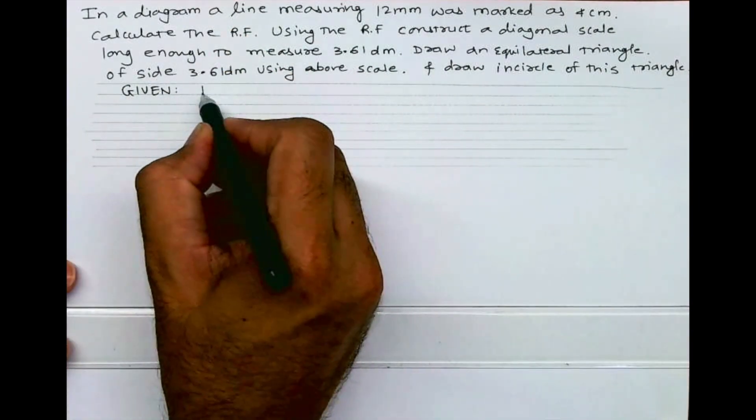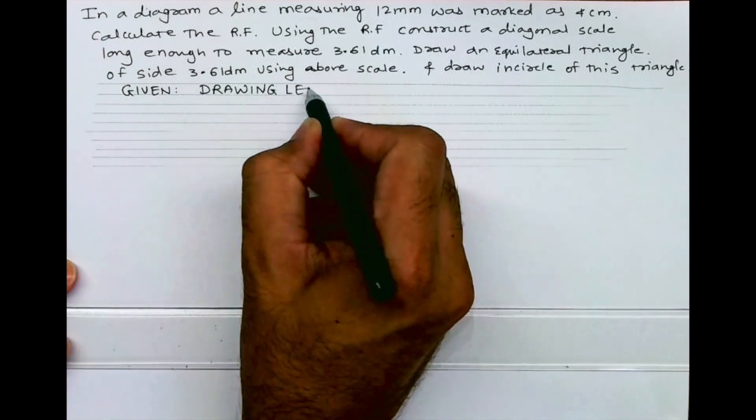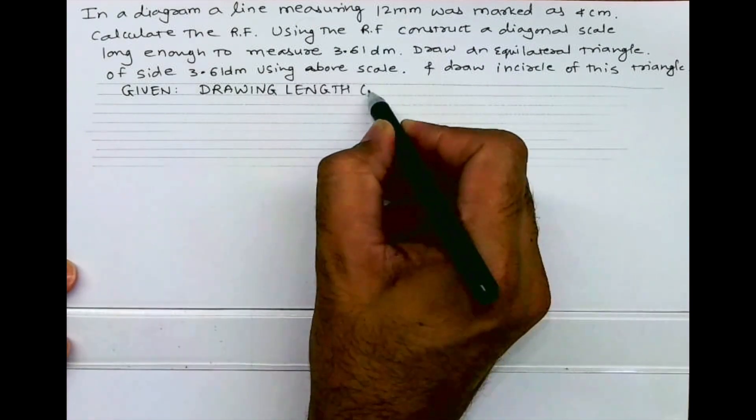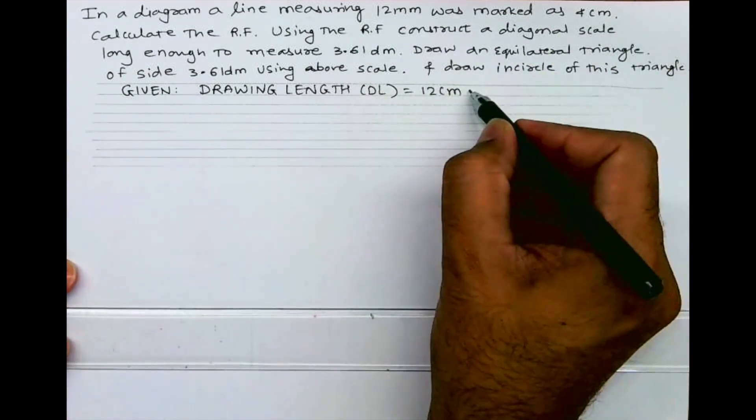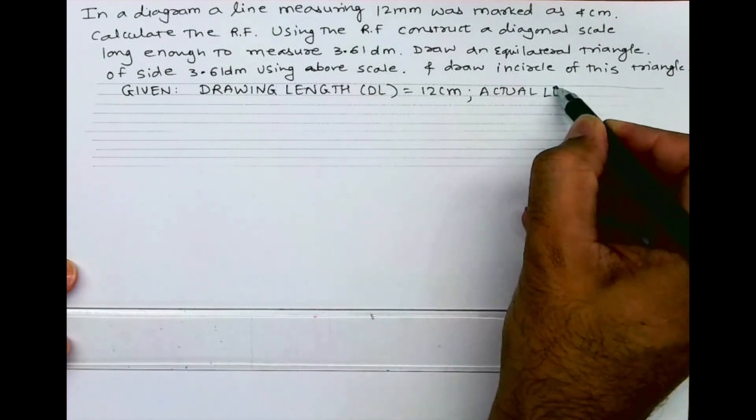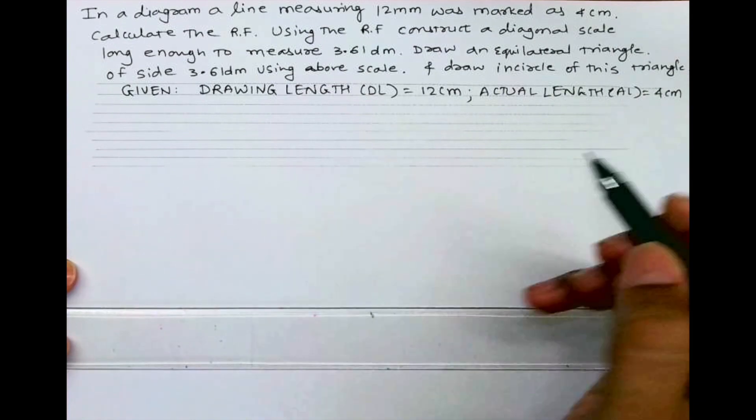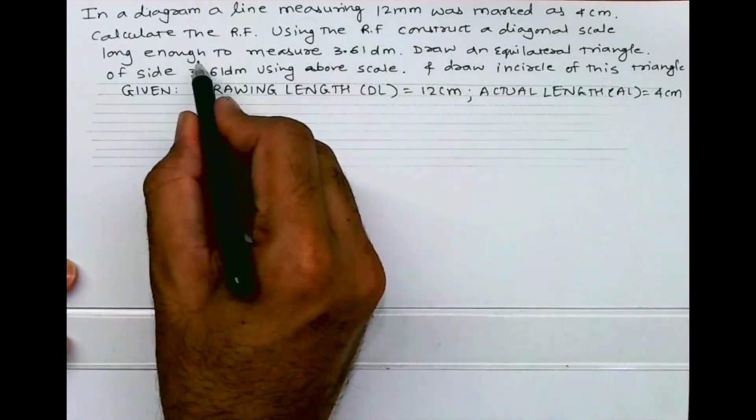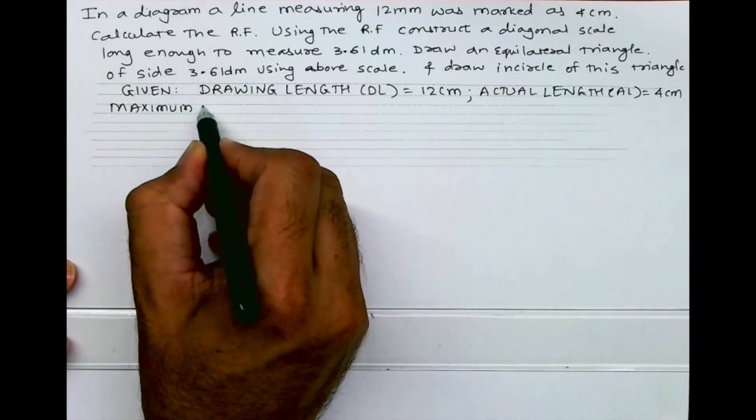First, we will write the given data. Drawing length is 12 millimeter - a line measuring 12 millimeters marked as 4 centimeter, so actual length is 4 centimeter. Then they have given maximum length is 3.61 decimeter.